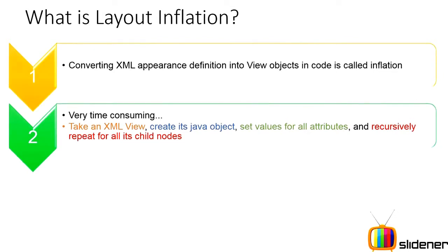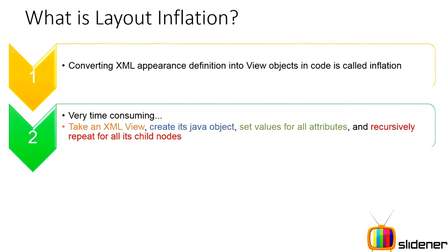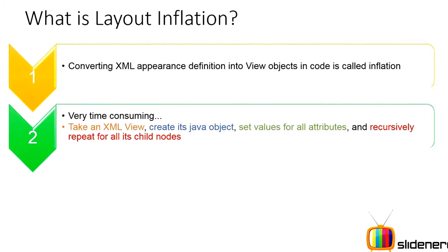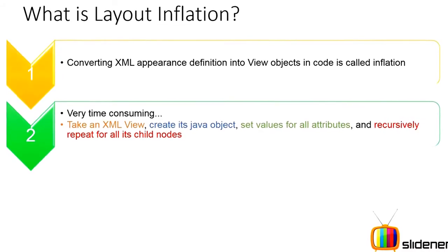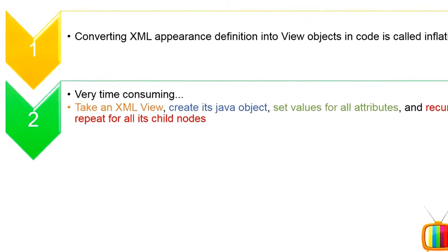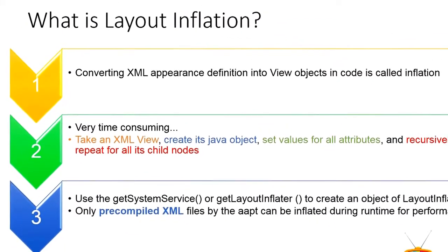This is a very time-consuming operation. Think about this — you have your LinearLayout, you have your TextView, your LinearLayout has layout_width, layout_height, orientation set to vertical, and your TextView also has set text, background — all these attributes have to be converted into Java values. On top of that, this is done recursively: the TextView is a child inside your LinearLayout, so first the LinearLayout is converted, then it goes inside every child recursively and converts them from XML to Java. That's why it's a very time-consuming and resource-intensive operation.